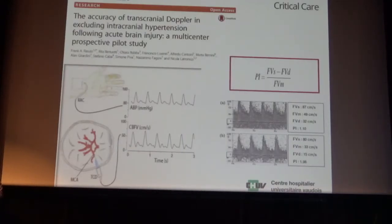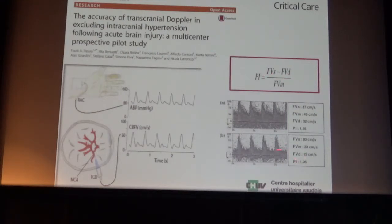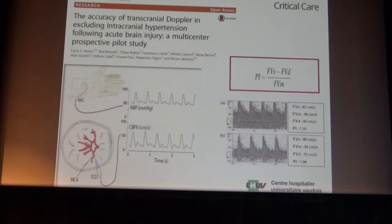We perform regular Doppler. For transcranial Doppler follow-up of intracranial hypertension and brain compliance, the pulsatility index is very important — with increasing pressure, diastolic velocities decrease and the pulsatility index rises. This is useful for following cerebral circulation and secondary ischemia. When ICP is around 20-25, we combine ICP with brain oxygen and transcranial Doppler to adjust the intensity of therapy.